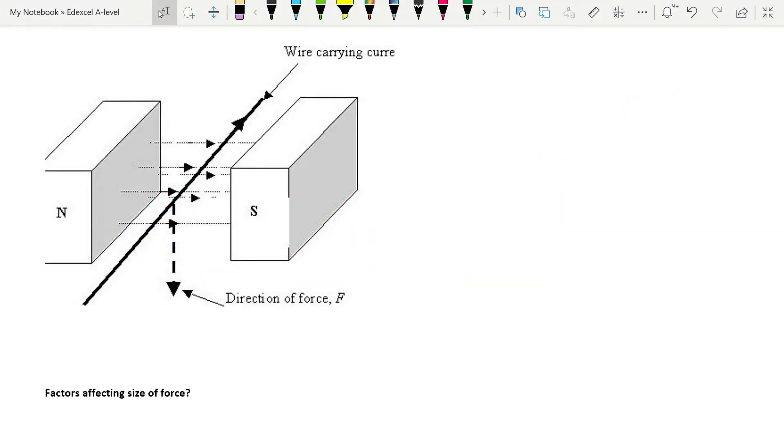And again you can practice applying Fleming's left hand rule here. First finger points in the direction from north to south so towards the left, our second finger is going to be pointing in the direction of the current so into the screen along there, and you'll find that the direction of the force is downwards as shown.